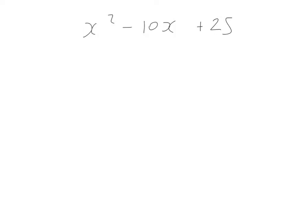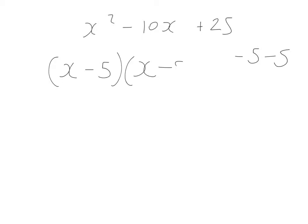Factorize x squared minus 10x plus 25. Again, look for the highest common factor — can't find one. Two numbers that multiply together to give plus 25 and add together to give minus 10. To get a positive result the signs must be the same, and since the middle term is negative, both must be minus. That's minus 5 and minus 5: minus 5 times minus 5 is plus 25, and minus 5 plus minus 5 is minus 10. We can write that as (x − 5) all squared. That's the final answer.